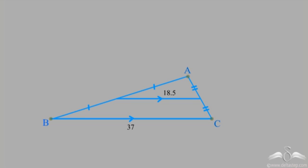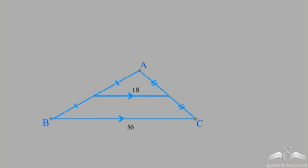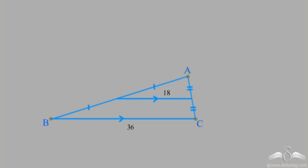Even if I change my triangle by moving A while keeping BC fixed, the length of the midsegment does not change — it remains 18.5, half and parallel. As soon as I change side BC — say I make it 36 — the midsegment changes to 18, which is half of 36, and it is still parallel. So the midsegment is always parallel and half of the third side.